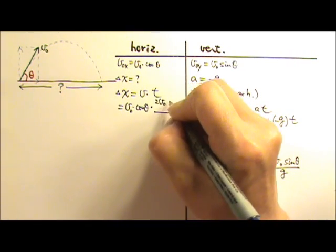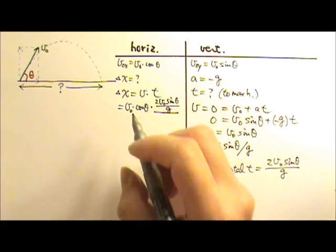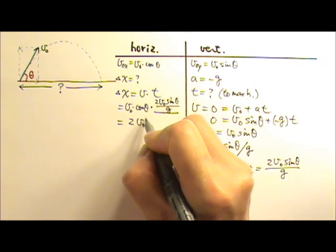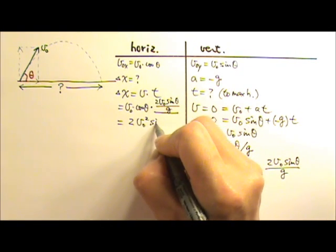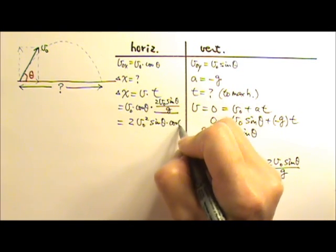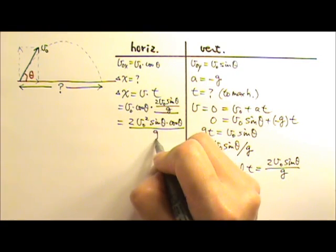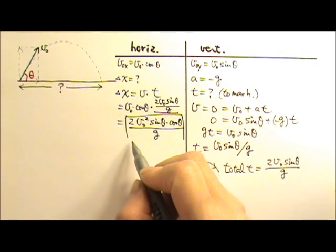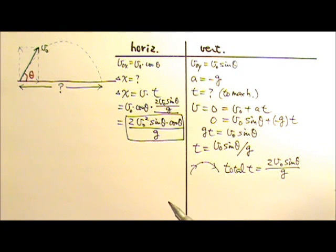Twice the V₀ sine theta divided by G. So this gives me twice the V₀ squared sine theta times cosine theta divided by G. And this is how far away the water beam hits the ground.